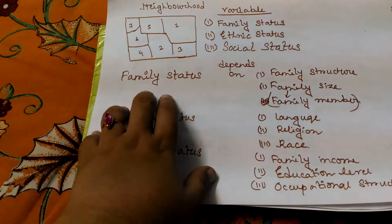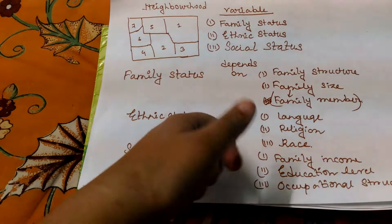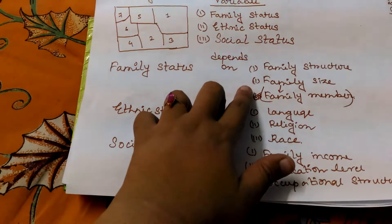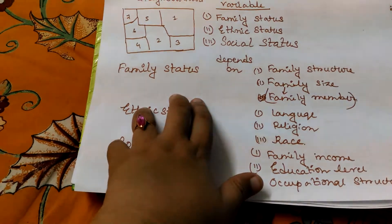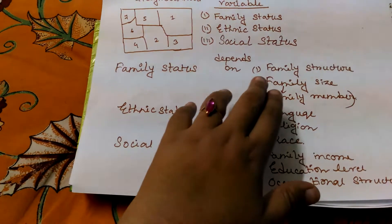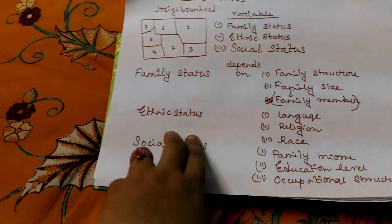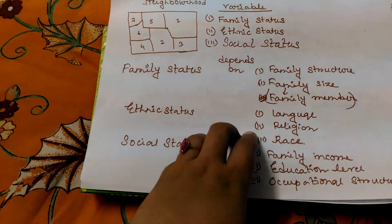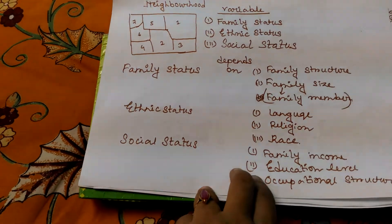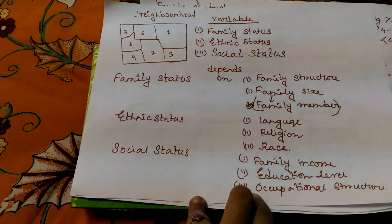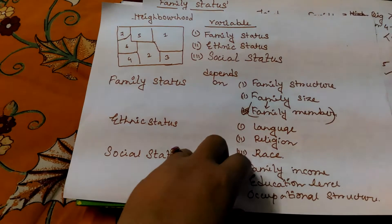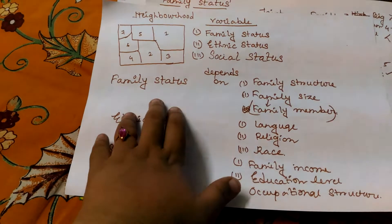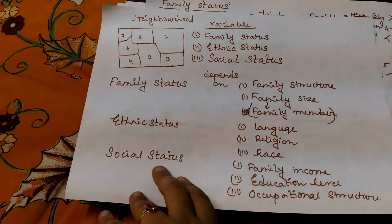Family status is not something you can understand by looking at just one or two variables — it is a combination of more than two or three variables, like family structure and family size. Ethnic status is mainly connected with three important variables: language, religion, and race. Social status has a connection with family income, education level, and occupation structure. These variables together form the concepts of ethnic status, family status, and social status.